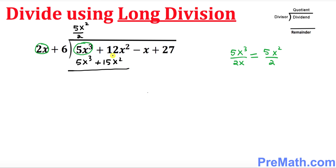The next step is to switch the sign — change the sign. This positive becomes negative and this positive becomes negative, so these two terms are gone. What we have now is negative 3x squared. Bring down the remaining two terms: minus x plus 27.